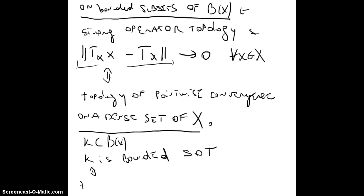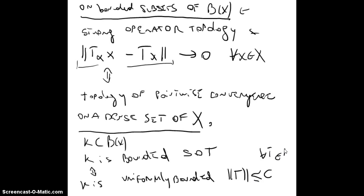Also, on bounded sets of the space of bounded operators, if K is in X then K is bounded in the strong operator topology, which coincides with K being uniformly bounded. So when we have the norm of T_n less than or equal to some constant C for all t in K, finding that the operators T(t) are uniformly bounded is the same as saying K is bounded in the strong operator topology, meaning convergence for all x in X. So we just need pointwise convergence on a dense subset of X.